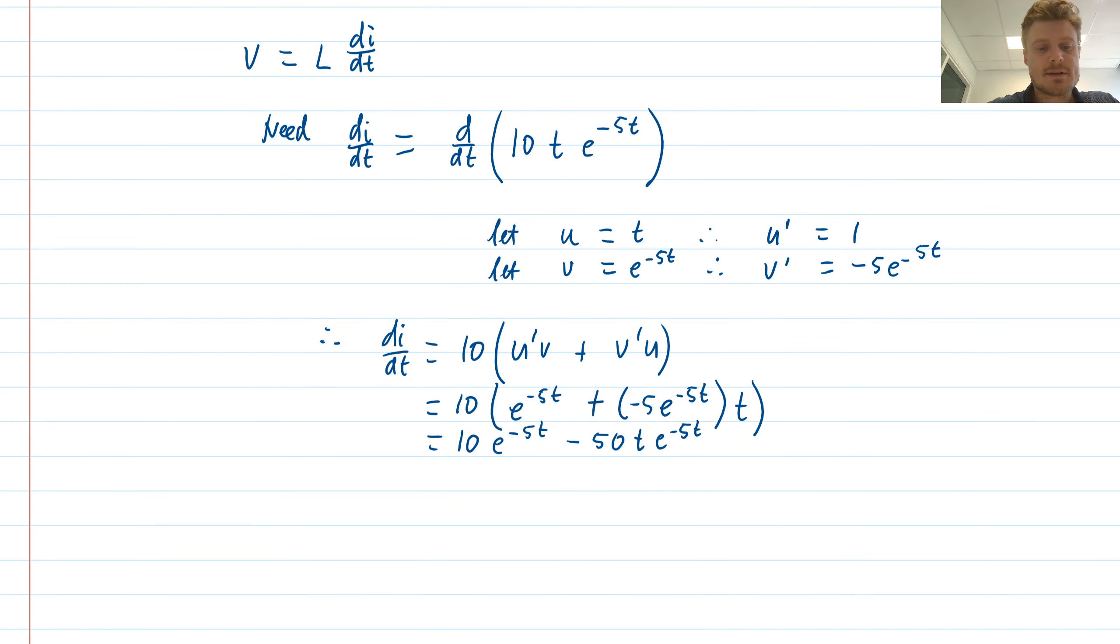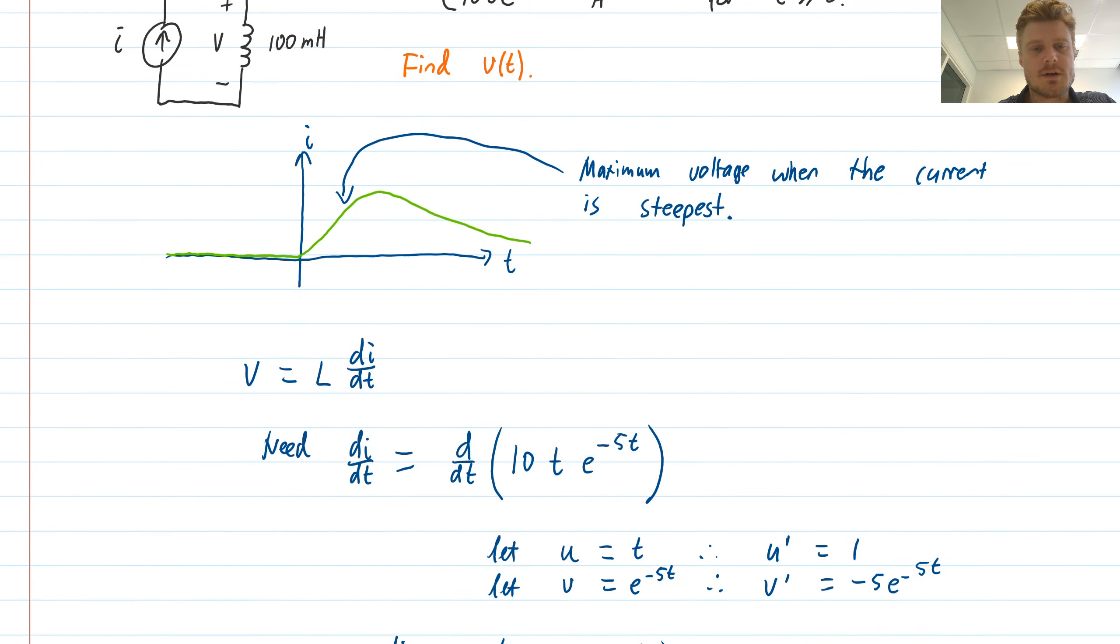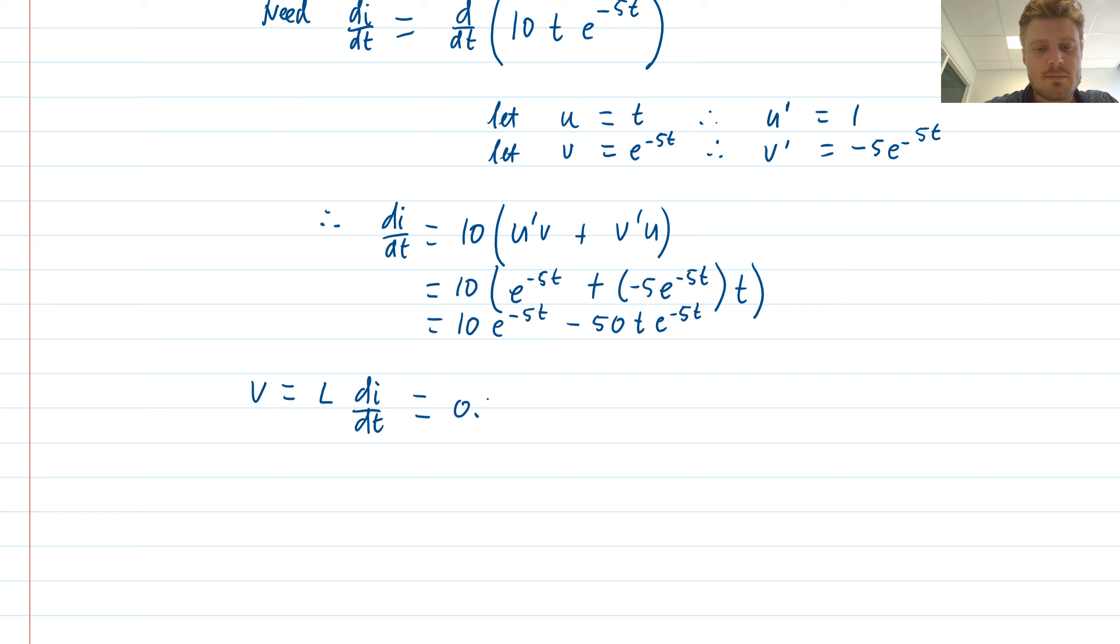Now I'm ready to use my equation for the voltage on the inductor. I have that the voltage on the inductor is L di/dt, which was a 100 millihenry inductor, so that's 0.1 henry. Always convert to the base units. So 0.1 henry times di/dt, which is this expression: 10 e to the minus 5t minus 50t e to the minus 5t.